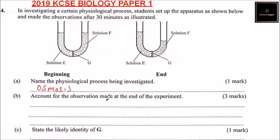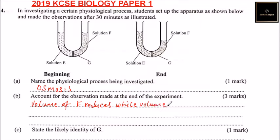Osmosis. Part B of the question: account for the observation made at the end of the experiment. The observation made is that the volume of F reduces while the volume of A increases.